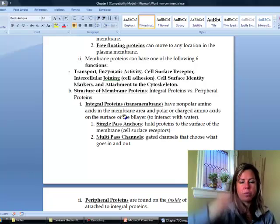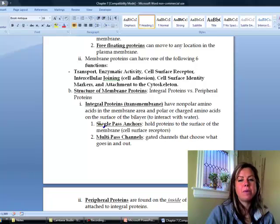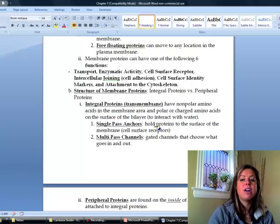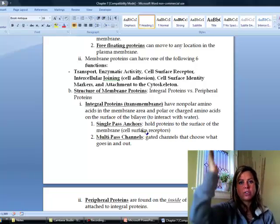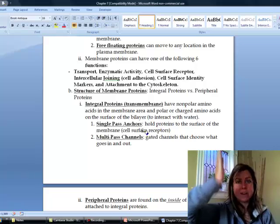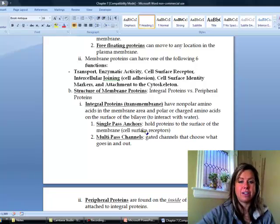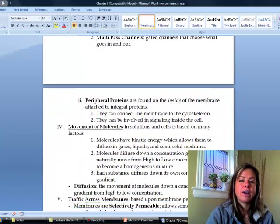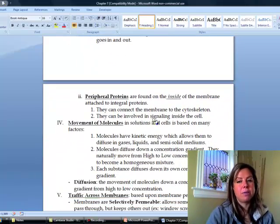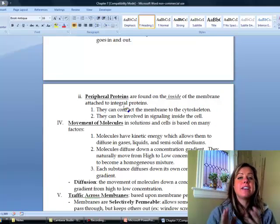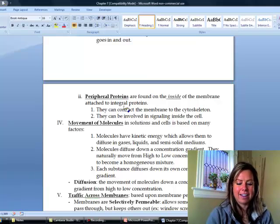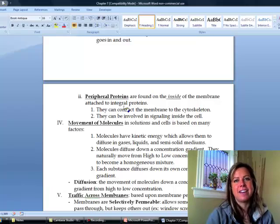Now, integral proteins, the ones that go from one side to the other, can either be what are called single-pass anchors, which are just kind of there to hold everything together, or multi-pass channels, which are going to be like those tubes that we talked about that things can travel into and out of the cell with. And then the peripheral proteins are going to connect the membrane to the cytoskeleton and also help with signaling. Now, in the next section, we're going to talk about how things can move across the cell membrane, and this is that really important section that nurses always say that are on their exams and that type of stuff.